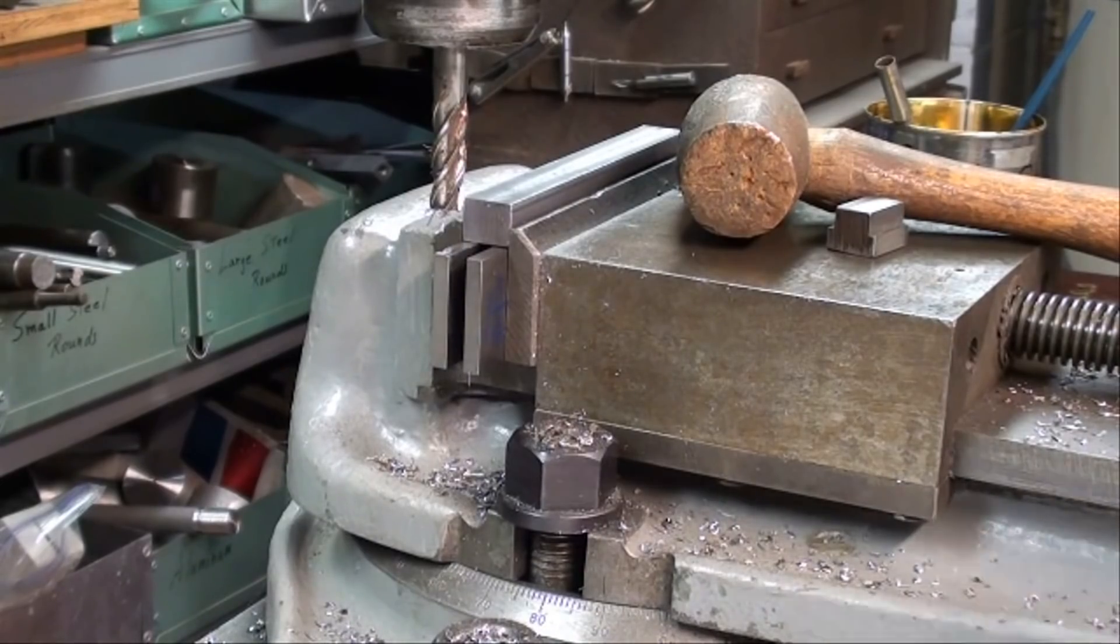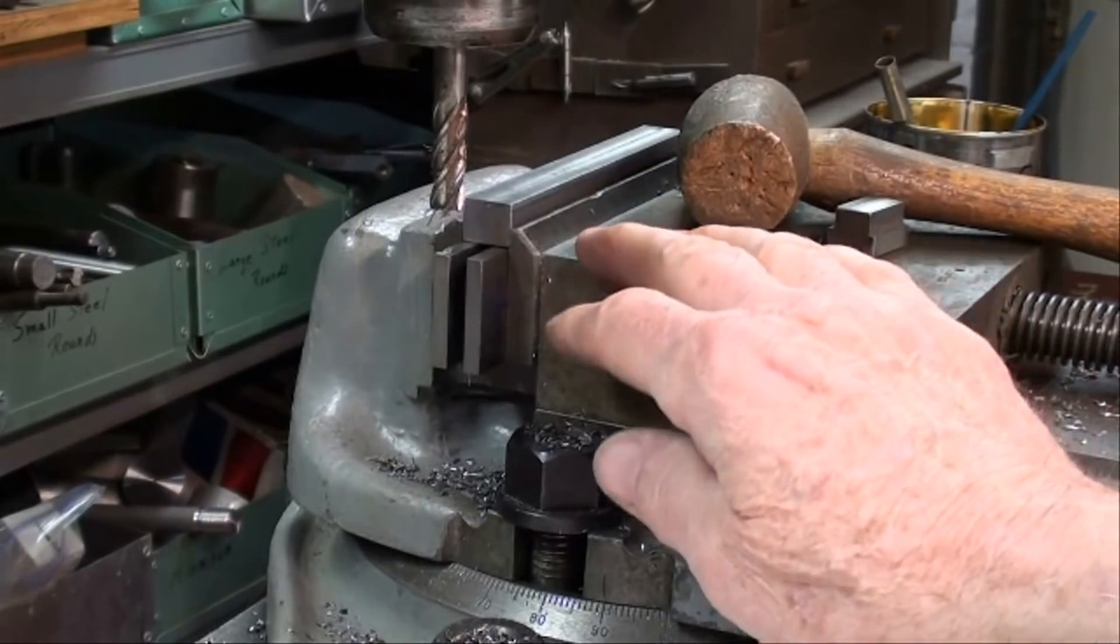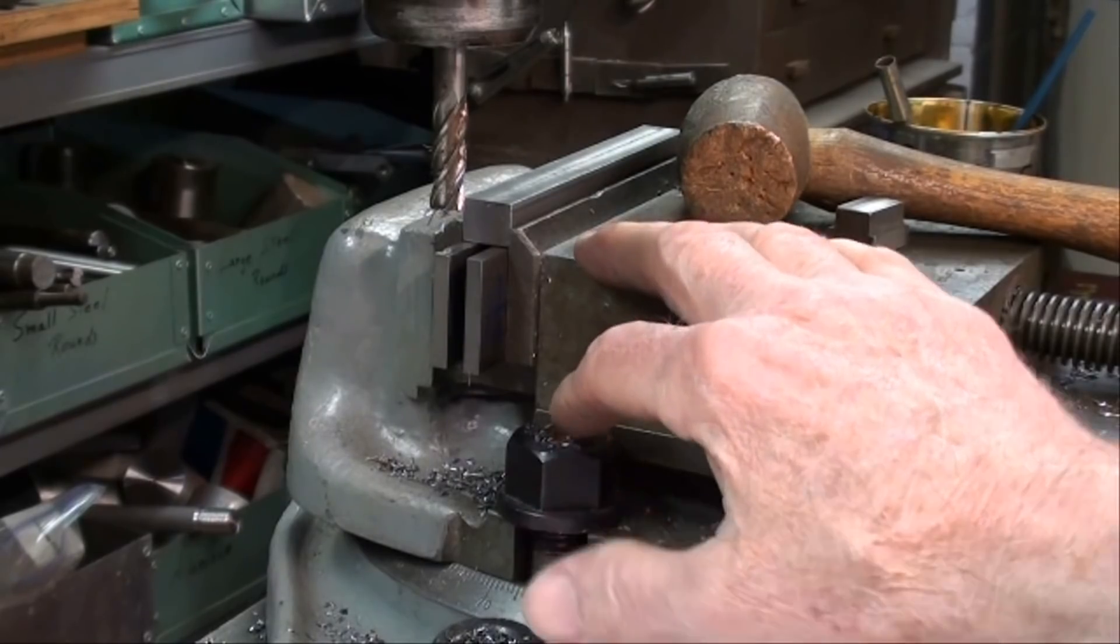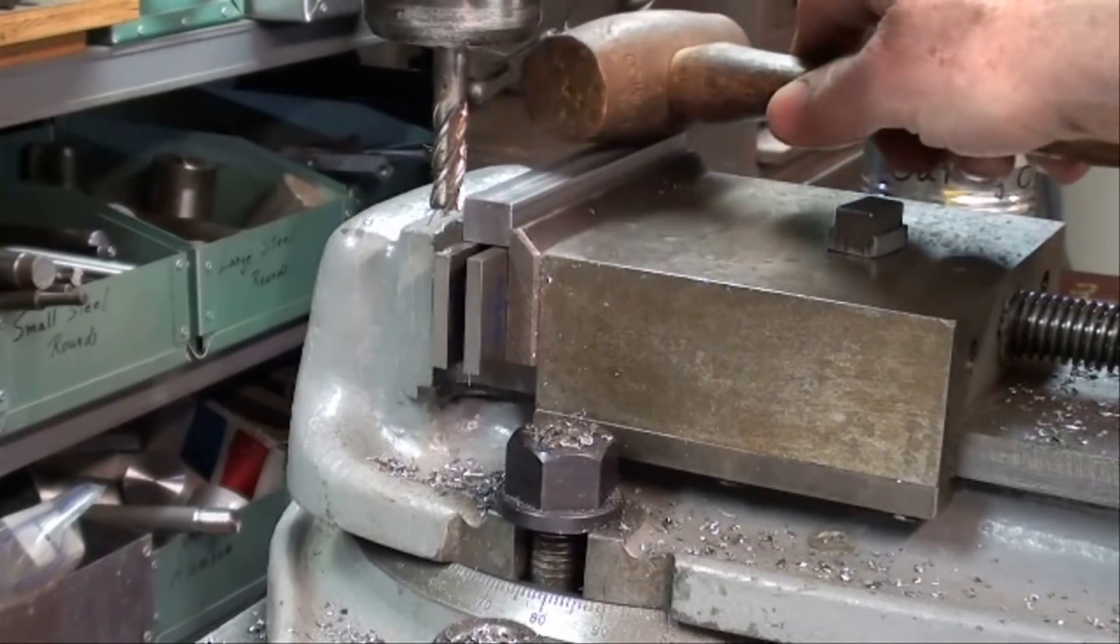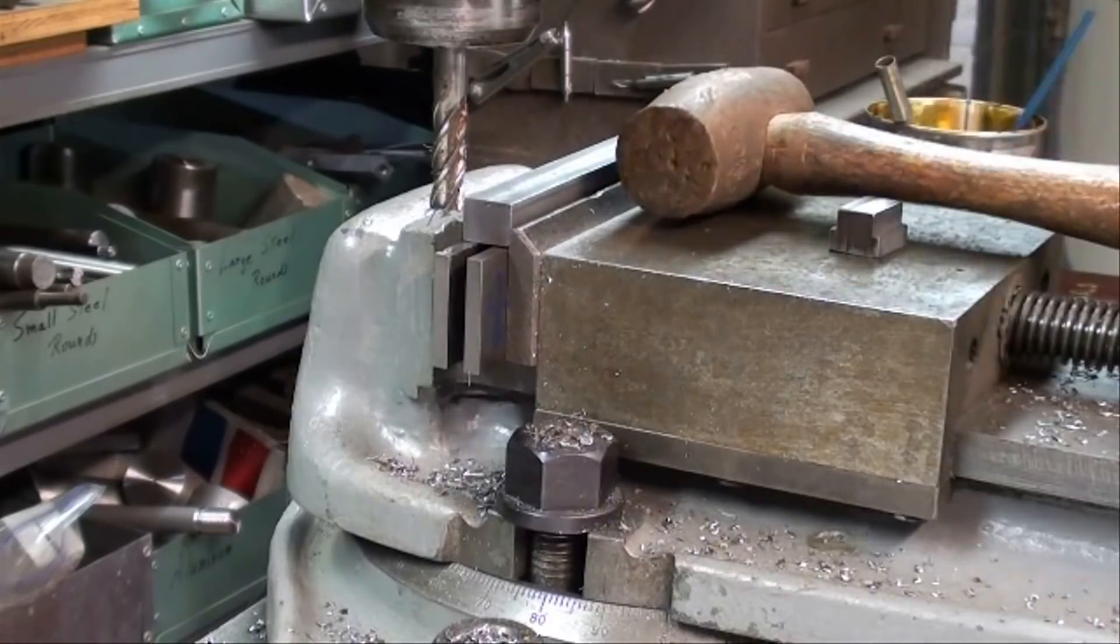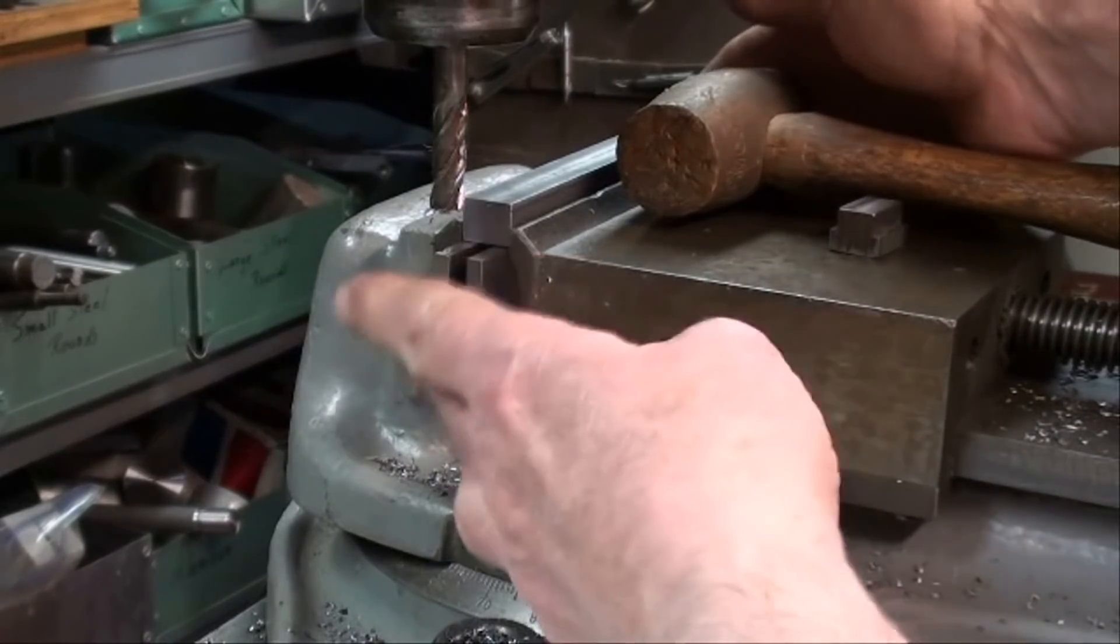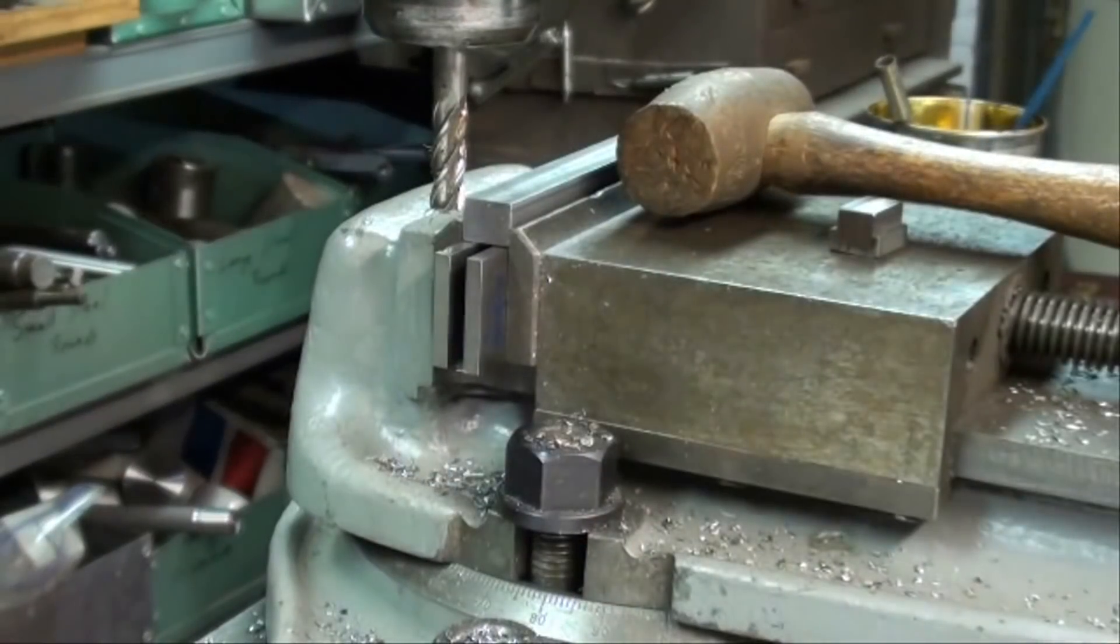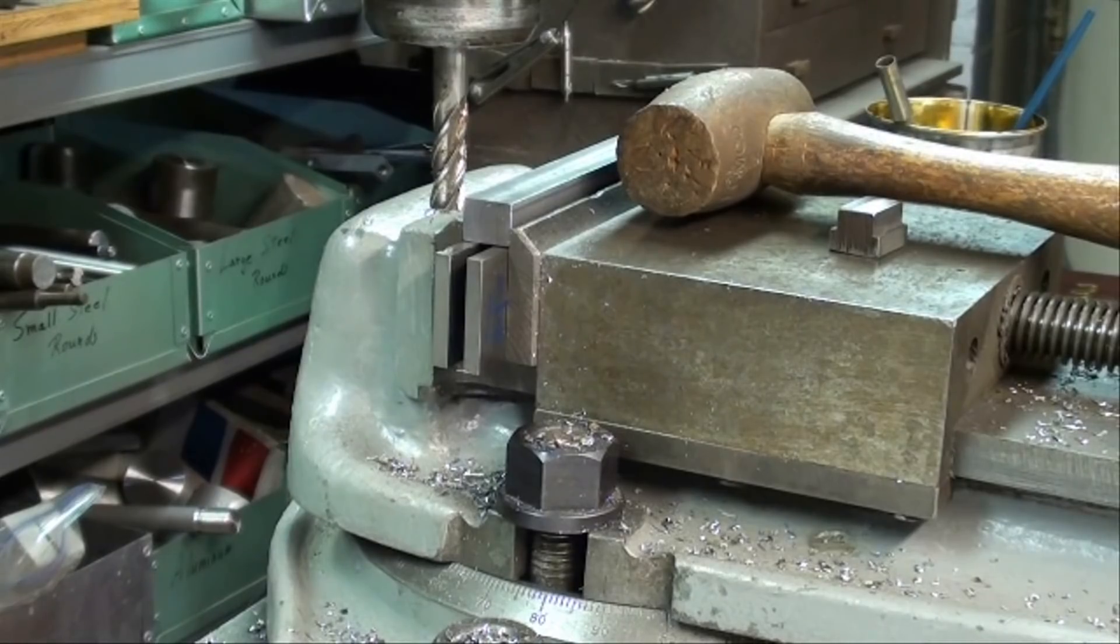Each and every time you take the work out of the vise and then put it back in, make sure that you open the vise up, remove the parallels, remove all the chips, wipe it clean, wipe the parallels clean, put the work back in, snug the vise up, and then tap it down with your soft hammer. Then re-tighten and tap it lightly again to make sure it's down on the parallels. The parallels should be tight when you try to push them, and then you know you're seated on the parallels. Otherwise you might be up a little bit on one side or the other, so check your parallels.